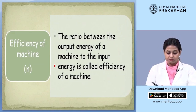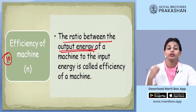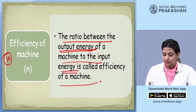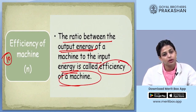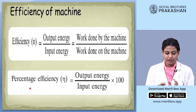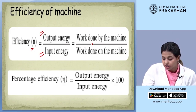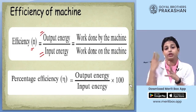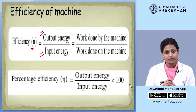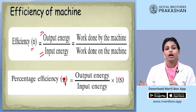Now we define the efficiency of a machine. The ratio of the output energy of the machine to the input energy is defined as the efficiency of the machine. It is referred to with the small letter N (eta). Efficiency equals output energy upon input energy, or equivalently, work done by the machine upon work done on the machine. If I talk about percentage efficiency, it is equal to output energy upon input energy multiplied by 100.